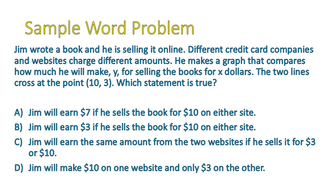It's important to understand what our X values and Y values are, because the correct answer here is B: Jim will earn $3 if he sells the book for $10 on either website. The cost and profit on either website cross at the point (10, 3) — if he sells it for $10, he will make $3 on both websites. The other options are thrown in to mislead you: he'll earn $7 (the difference between the two numbers), or he'll earn the same amount from both websites, or he'll make $10 on one and $3 on the other. It's important to read the question carefully, look at what it's actually saying, and break down the pieces of information.